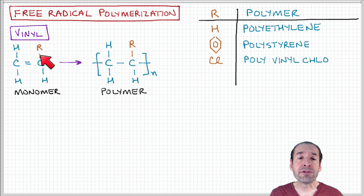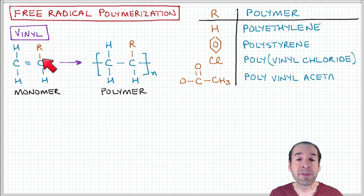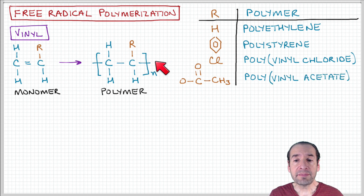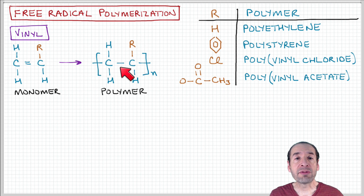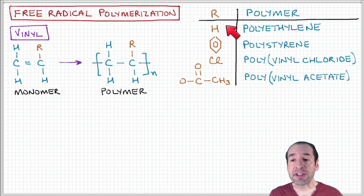and then some other group attached in the fourth position. These monomers polymerize to form a chain with a repeat unit, where this R group can have various compositions. Some examples are shown here in this table.